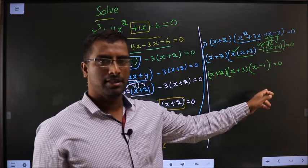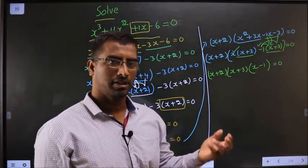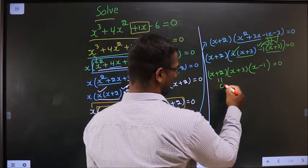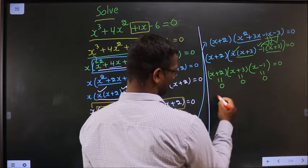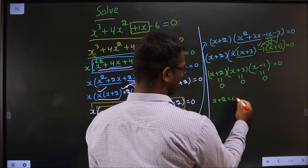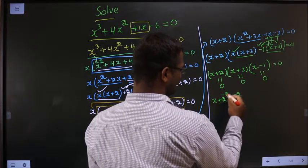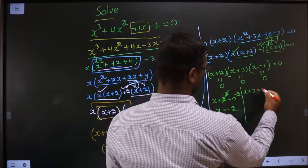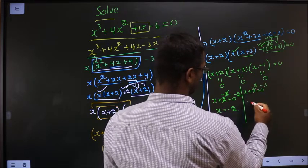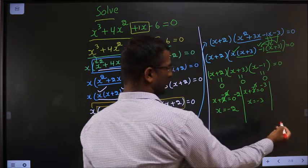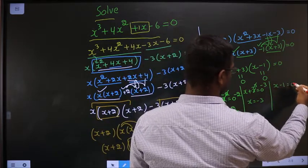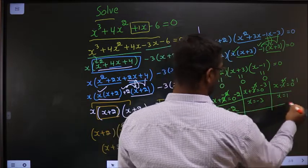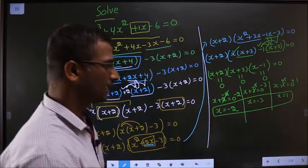Product of these three brackets equal to 0 can only happen if either one of them is equal to 0. So that tells us either this equal to 0 or this equal to 0 or this equal to 0. If x plus 2 equal to 0, take minus 2 on both sides. I get x equal to minus 2. If x plus 3 equal to 0, take minus 3 on both sides. So x equal to 1. So these are the values of x for our given equation.